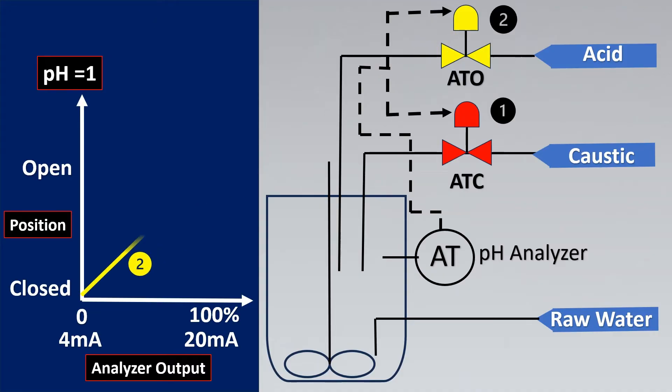Now in this case if the pH is 1 that means your surface is completely acidic. So we would want the acid valve which is valve number 2 to be completely closed. And eventually when the pH is 14 it is completely basic, we would want the acid valve to be completely open.